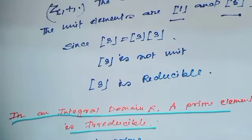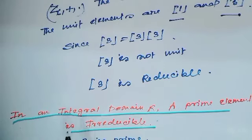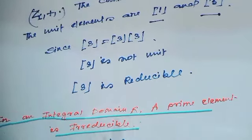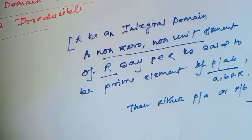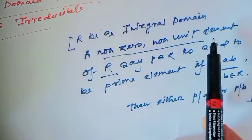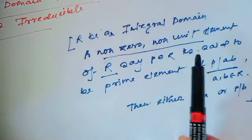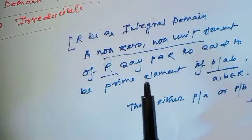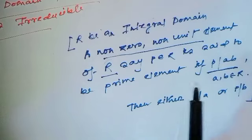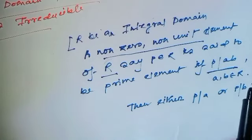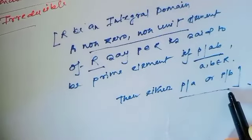But if the ring is an integral domain, then a prime element always implies the element is irreducible. The theorem states: in an integral domain R, a prime element is irreducible. First recall the definition of prime element: R is an integral domain, then a non-zero non-unit element P is said to be prime if P divides AB (where A, B belong to R) implies either P divides A or P divides B.